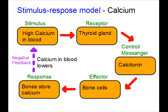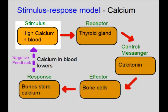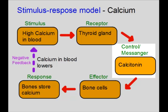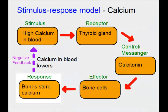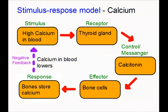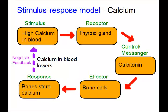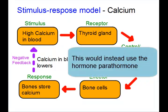Our next example is calcium. If the stimulus is a high calcium level in the blood, that's detected by cells in the thyroid gland, which release a hormone called calcitonin. That causes an effect in the bone cells — the calcium is stored in the bones for later use, which lowers the calcium levels in the blood. There's also an opposite effect: if calcium levels are low, calcium stored in the bones can be released to increase blood calcium levels.